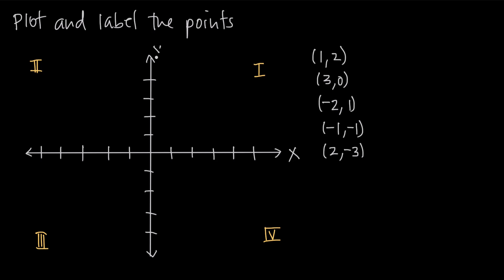This is going to be our y-axis up here. The point where the x and y-axis intersect each other is this point in the middle right here — we call it the origin, and it's the point (0, 0), where x is 0 and y is 0. In the positive direction of the x-axis, we go out 1, 2, 3, 4, 5. In the negative direction, we have negative values. This is like the number line for x with 0 in the middle, positives on the right, and negatives on the left.